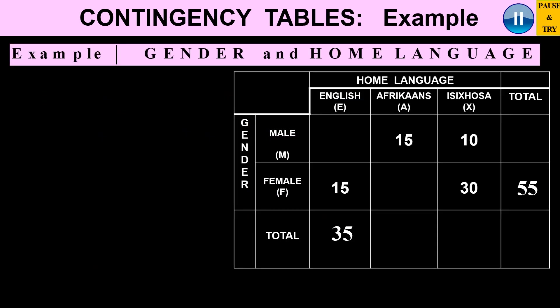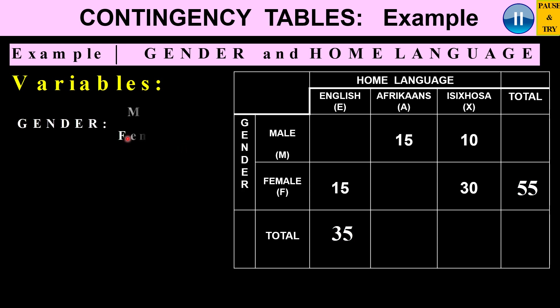Let's look at an example of a contingency table. Here I'm going to take a table that reflects gender and home language. So as we said, we have two variables. The one variable is gender, and for gender we have two categories here: male and female.